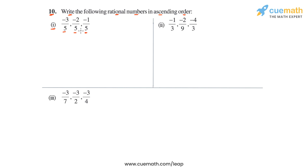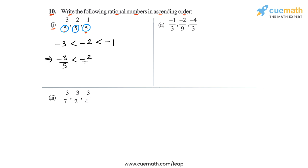Arranging these numbers in ascending order is easy since the denominators are the same for all three — the denominator is 5 in each case, so we can simply compare the numerators. The numerators are minus 3, minus 2, and minus 1. We note that minus 3 is less than minus 2 is less than minus 1, and this means minus 3 by 5 is less than minus 2 by 5 is less than minus 1 by 5. This is the three numbers arranged in ascending order for part one.